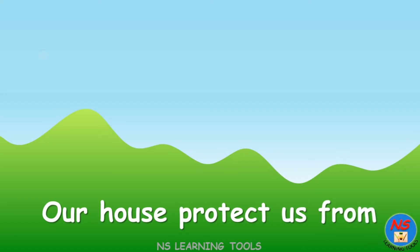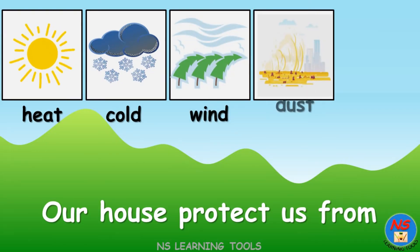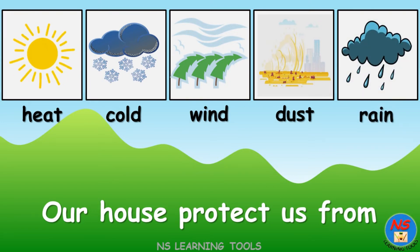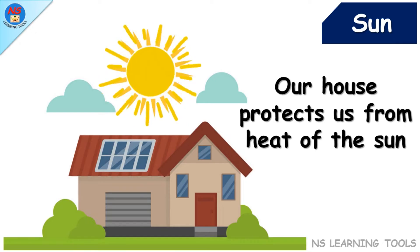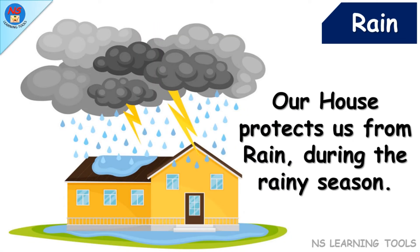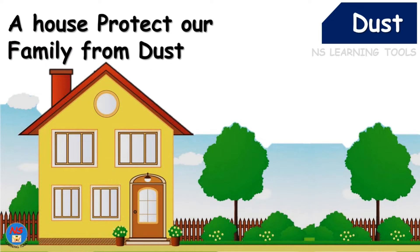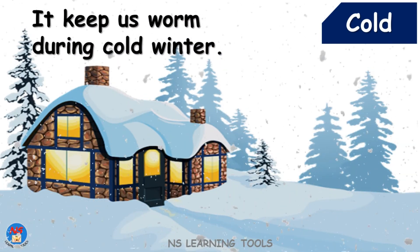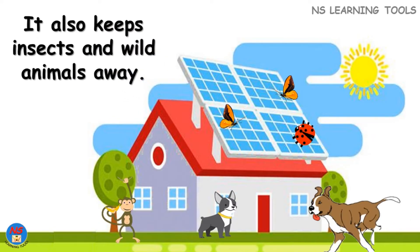Our house protects us from heat, cold, wind, dust, and rain. Our house protects us from the heat of the sun and from rain during the rainy season. A house protects us from the environment and bad weather, keeps our family from dust, and keeps us warm during cold winter. It also keeps insects and wild animals away.